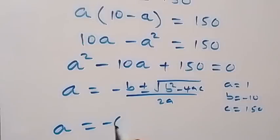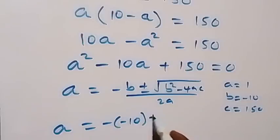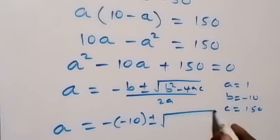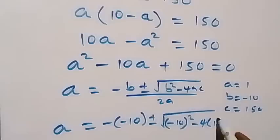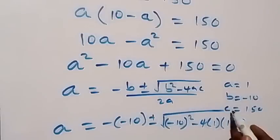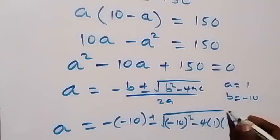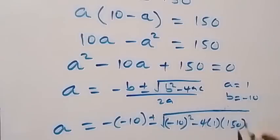Substituting, we get: minus (minus 10), plus or minus square root of (minus 10) squared minus 4 times 1 times 150, all over 2 times 1.